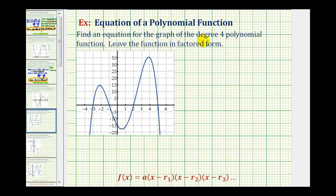We want to find an equation for the graph of the degree four polynomial function and leave the function in factored form. Because we have a degree four polynomial function, we should recognize that we have at most four real rational zeros or roots of the function.